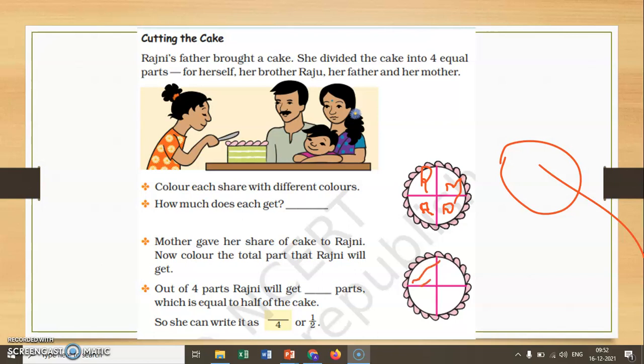So how much do you think Rajni will get? Rajni will get half part. Rajni will get two pieces out of the total four pieces, which we call 1 upon 2 or half.